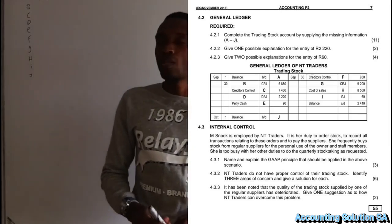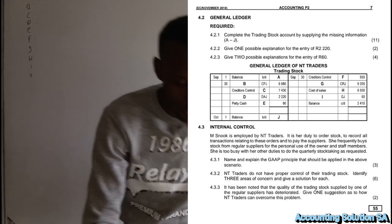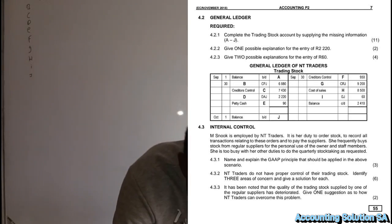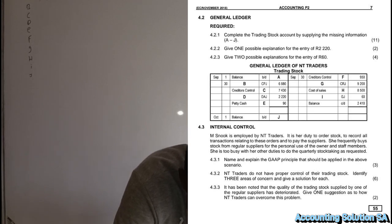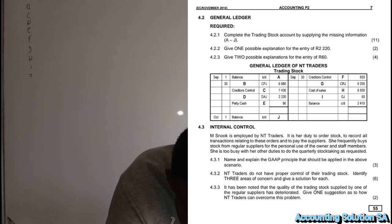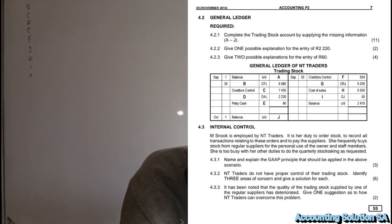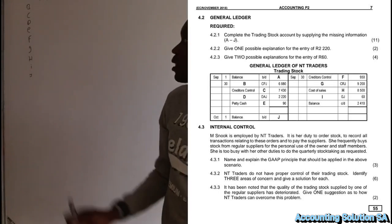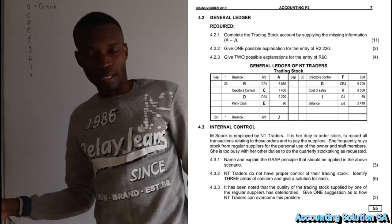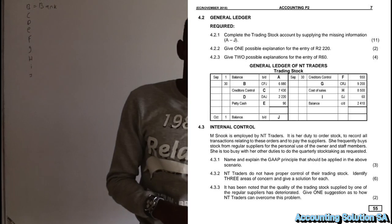Let's proceed to number B. If you check the folio column, it says cash payment journal and the amount is 6808. What do we record under cash payment journal? When something has been paid, cash — which is bank — is affected. So the missing word for number B is bank.